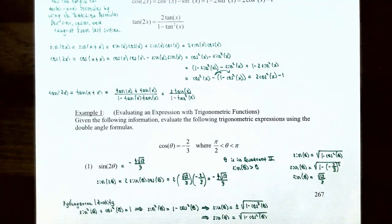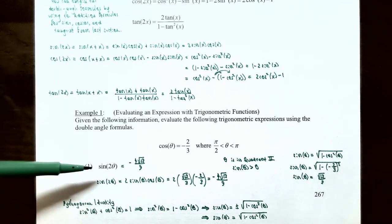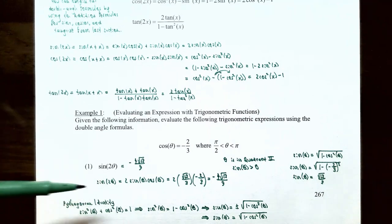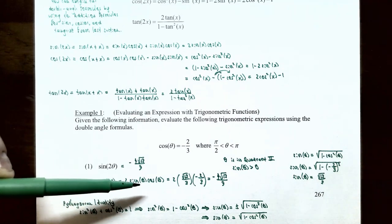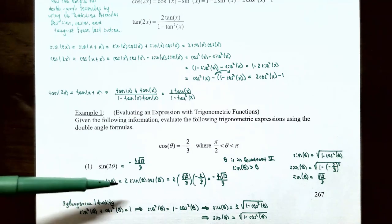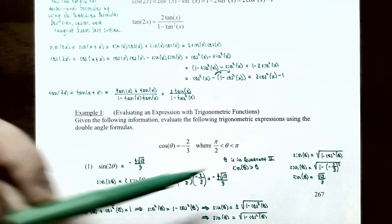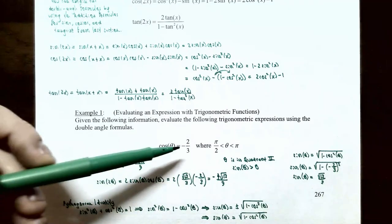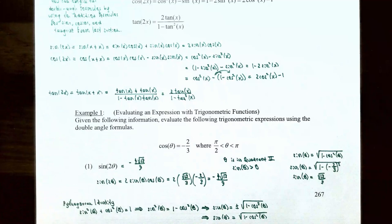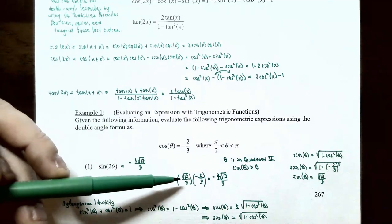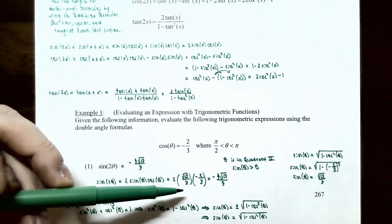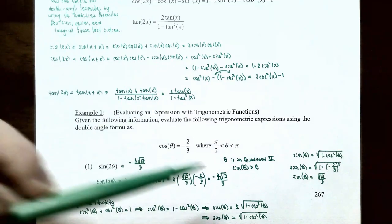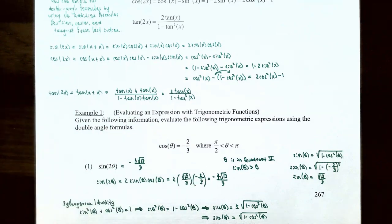Going back, sine of 2θ equals 2 times sine θ times cosine θ equals 2 times (√13)/3 times (−2/3), which simplifies to negative 4√13 divided by 9. That's the value of sine of 2θ.